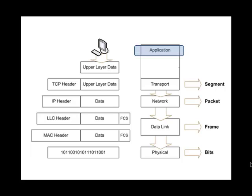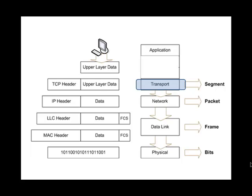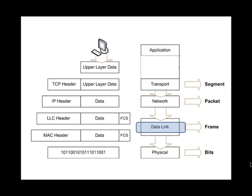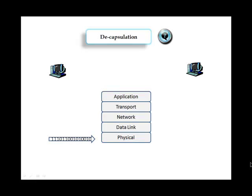So data travels from the application layer down to the transport layer, where it becomes a segment. It moves further down to the network layer, where the segment is encapsulated into a packet, and then to the data link layer, where the packet is encapsulated into a frame. Finally, at the physical layer, the frame is converted to ones and zeros and sent across the network.